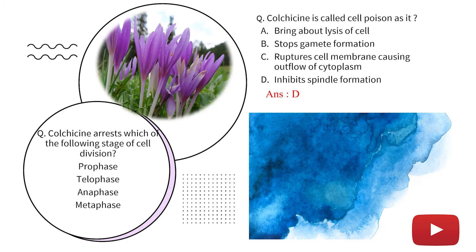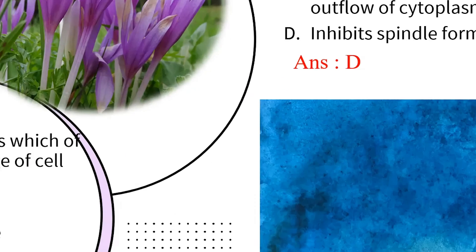Next question. Colchicine arrest which of the following stage of cell division? Option A, prophase. Option B, telophase. Option C, anaphase. And option D, metaphase. And we know that colchicine cell division is arrested in metaphase. Answer is D.